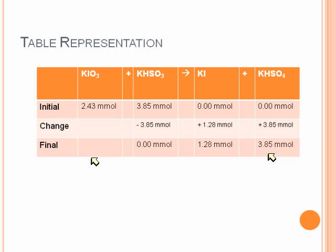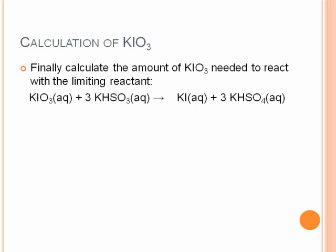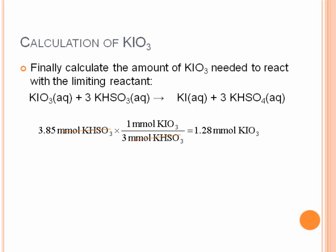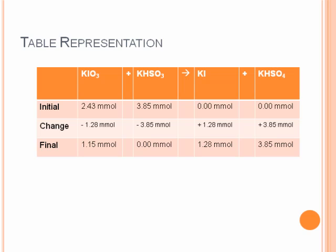And we just need to know about the KiO3. We want to calculate the KiO3 based on only the limiting reactant once again. We're going to start with 3.85 millimoles of KHSO3. Using our stoichiometry, 3 moles of that to 1 mole of the KiO3, we'll finally get one third as much, or 1.28 millimoles of KiO3 are needed to react up 3.85 millimoles of KHSO3. So if we go back to our table, we can fill in some more. We react up 1.28 millimoles of KiO3 and end up with 1.15 millimoles of KiO3 at the end of the reaction.